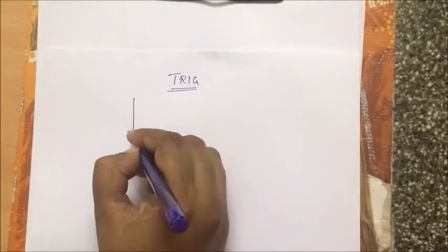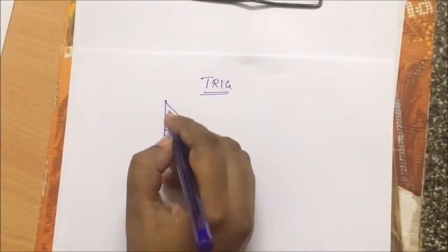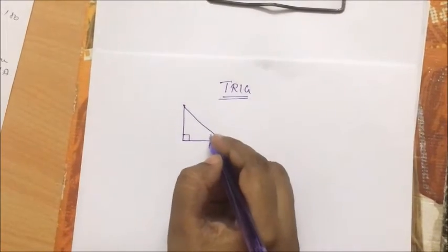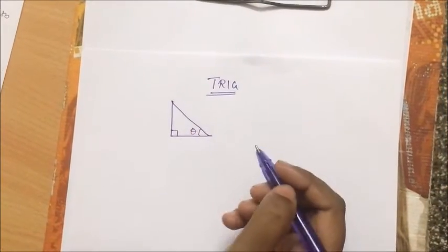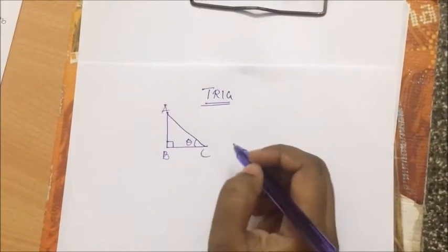We are going to be talking about right triangles only, so there's got to be a 90-degree angle. One of the acute angles we will label as theta.